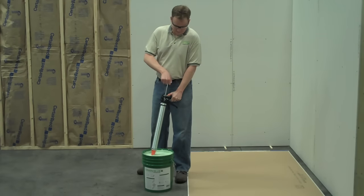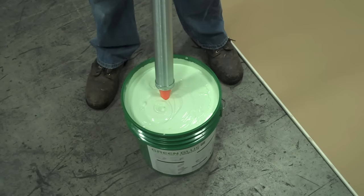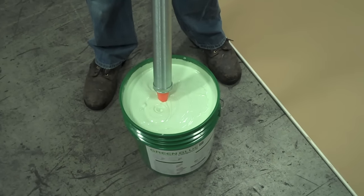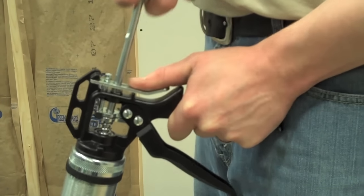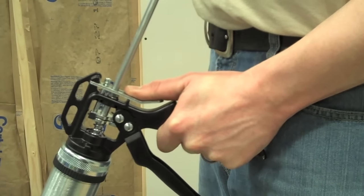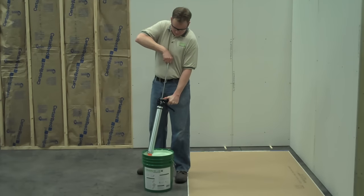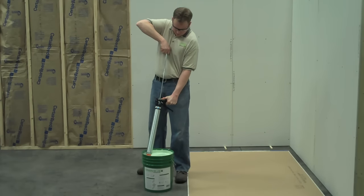When ready to apply the compound to your second layer of drywall, submerge the nozzle halfway into the bucket. Make sure to keep the silver lever pressed down while pulling the plunger in order to fill your applicator tool. Once the plunger stops, the applicator is full and contains approximately one tube or 28 ounces of the noise proofing compound.